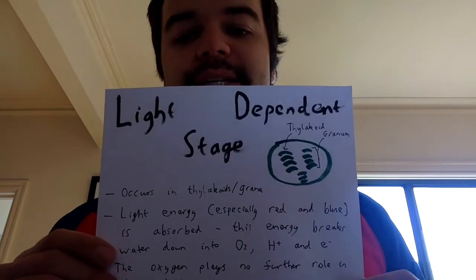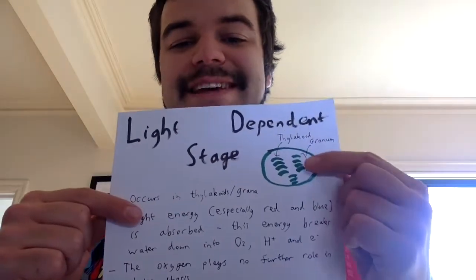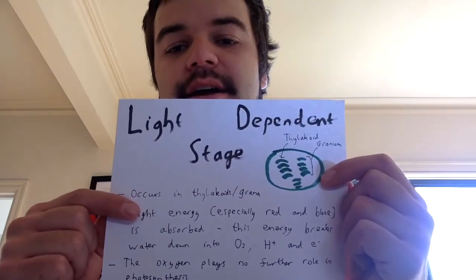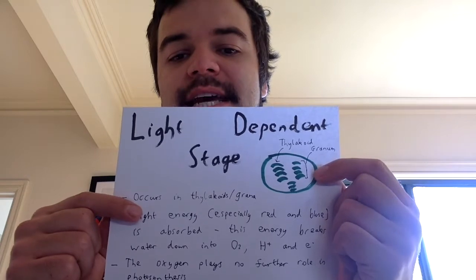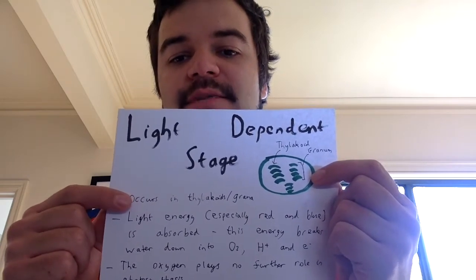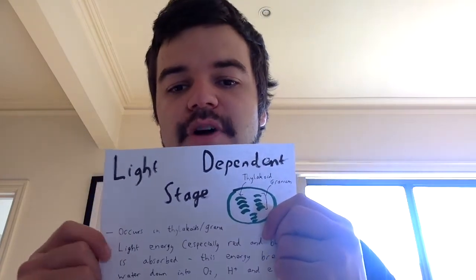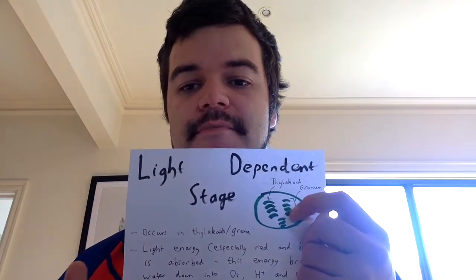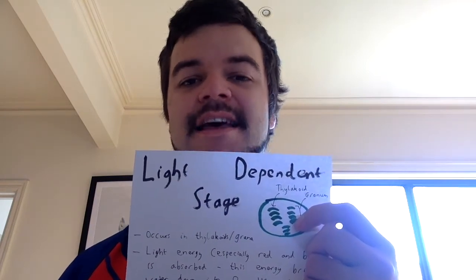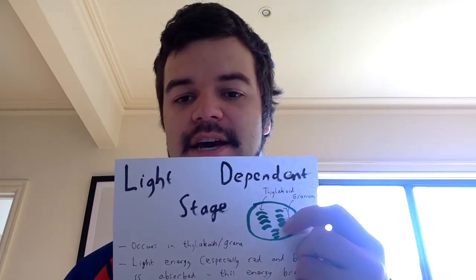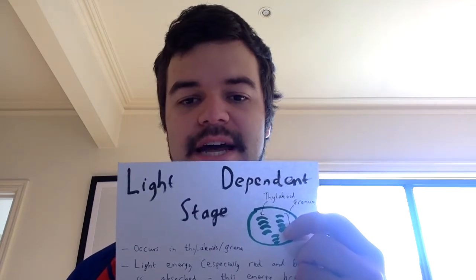Looking at the light dependent stage — here is a chloroplast. I've drawn the structures that we talk about for the light dependent stage, which are thylakoids or grana. You can say that the light dependent stage happens in a thylakoid, a grana, or a granum — it's fine. A thylakoid is just one of those disks. A granum is a stack of those disks, and grana is the plural. You can use any of them to say that's where the light dependent stage occurs — they're just membrane disks where this happens.